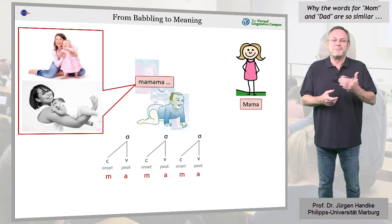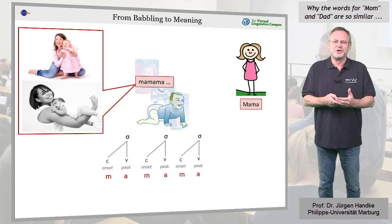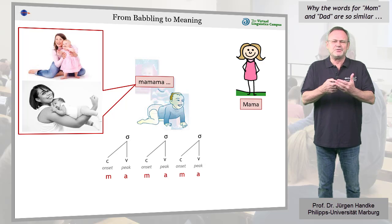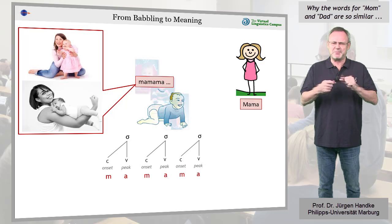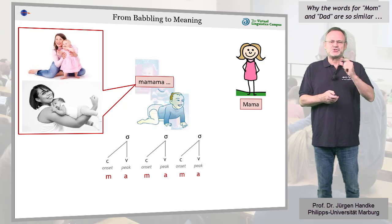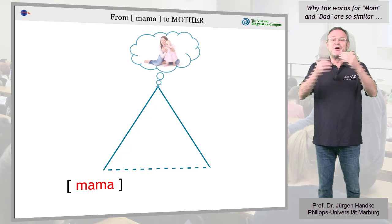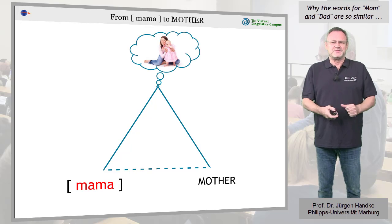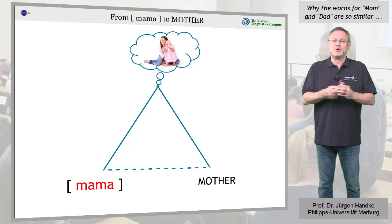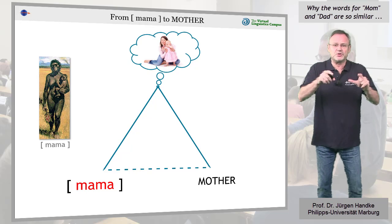The mother takes mama as meaning her, and in speaking to the child, refers to herself as mama. So mama now means mother. That's most likely what happened with the first humans.